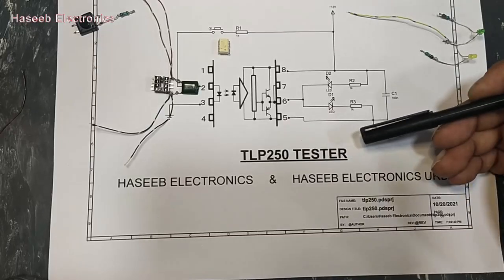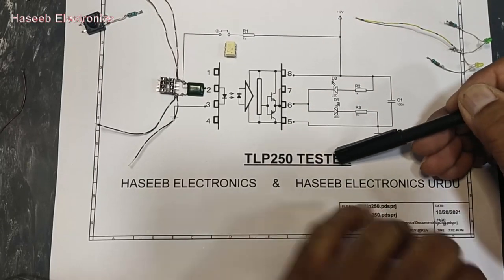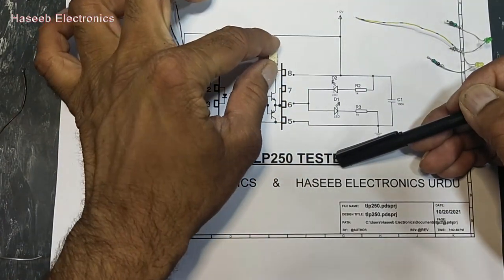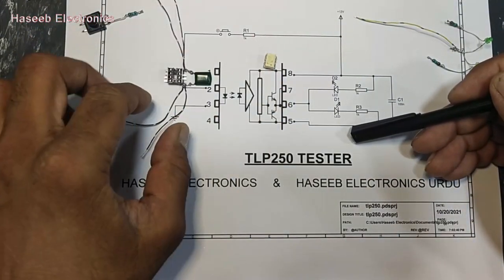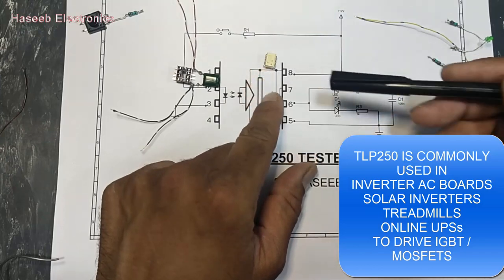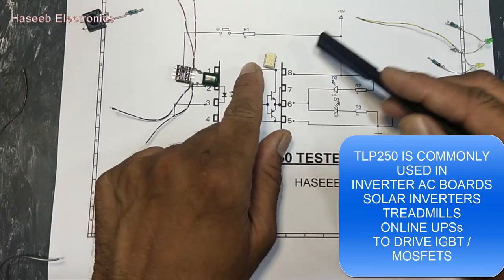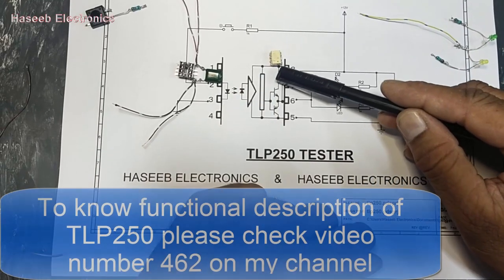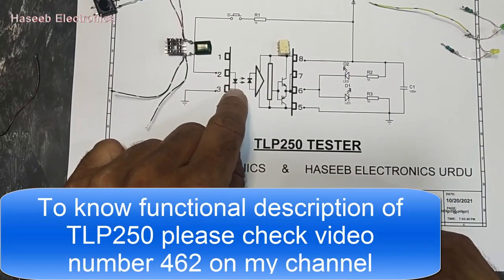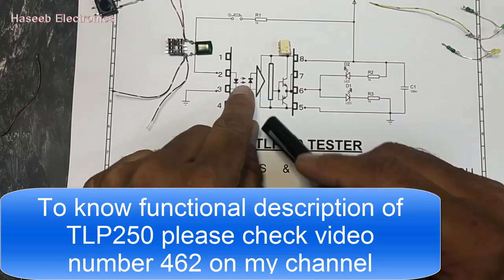TLP250 is an optocoupler used in inverters, ACs, solar inverters, UPS's, online UPS's to drive IGBTs and MOSFETs. At the input side it has an LED, then a light sensor, then a complete circuit inside.